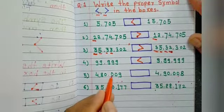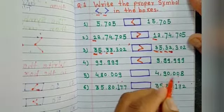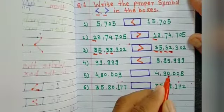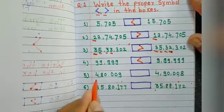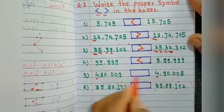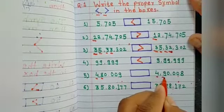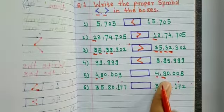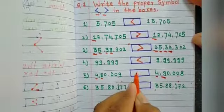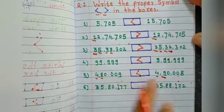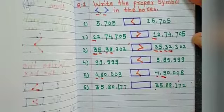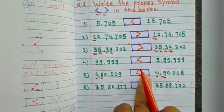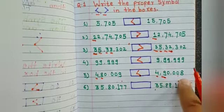4,80,009 and 4,90,008. How many digits? 1, 2, 3, 4, 5, 6 and 1, 2, 3, 4, 5, 6. Here 4, here 4. Here 8, here 9. Which is bigger? 9 is bigger. So 4,80,009 is smaller than 4,90,008.